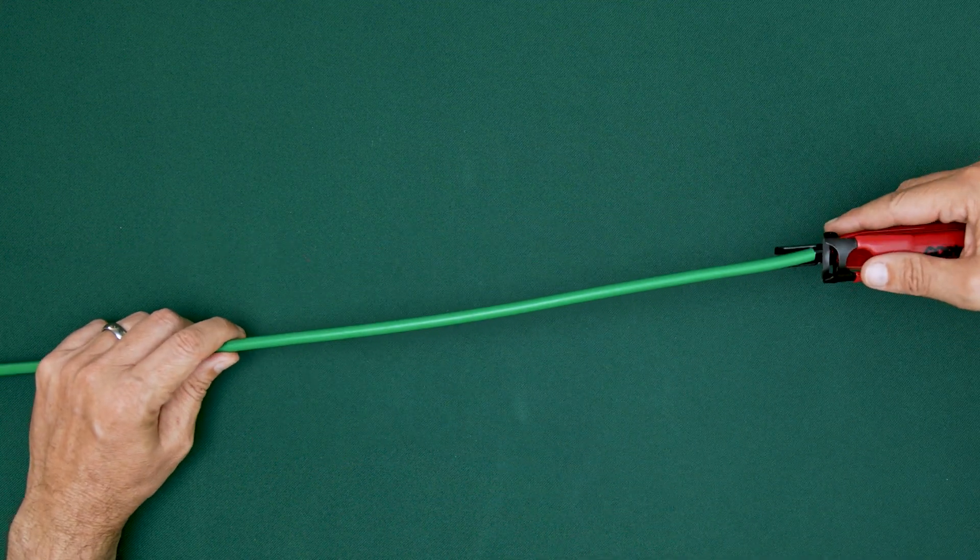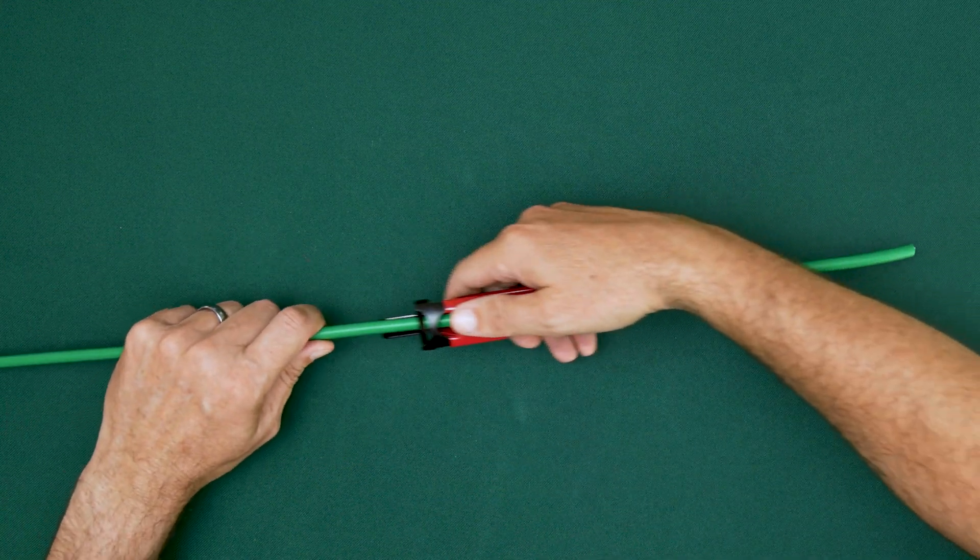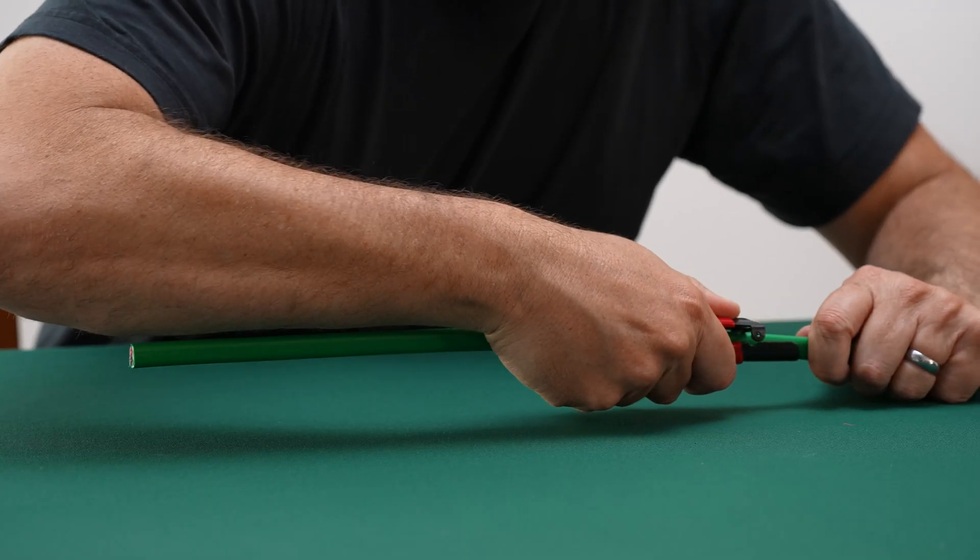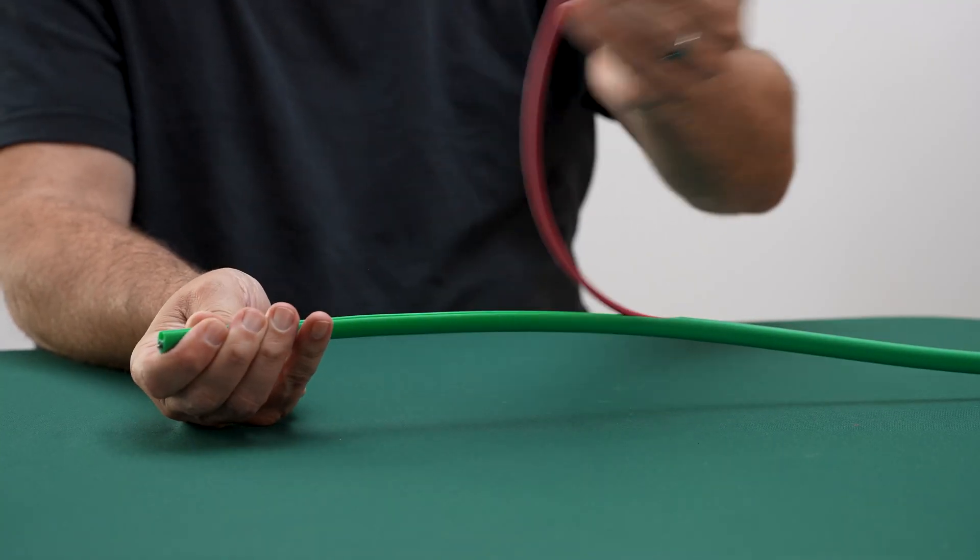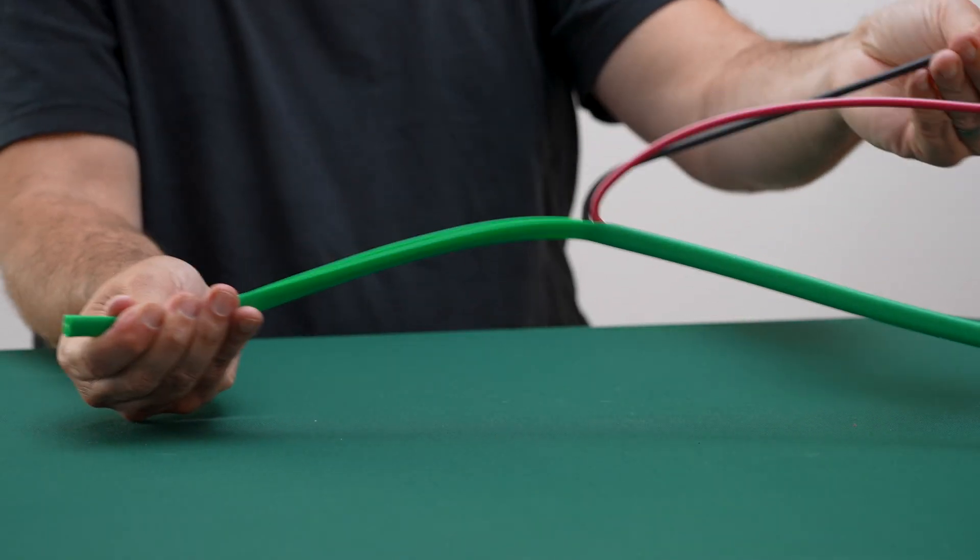Position the cable in the tool. Apply steady, even pressure and pull through in one smooth motion. The tool is designed to cut only the jacket, leaving the conductors fully protected.